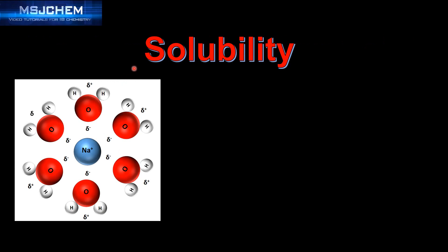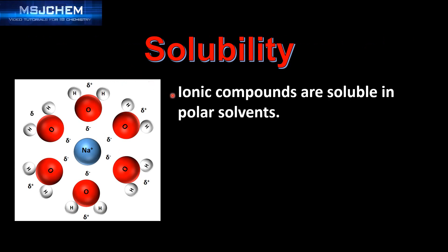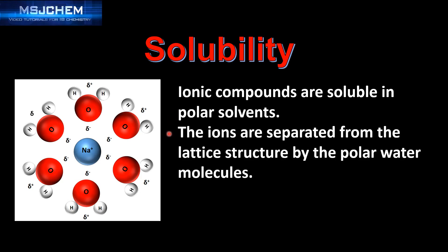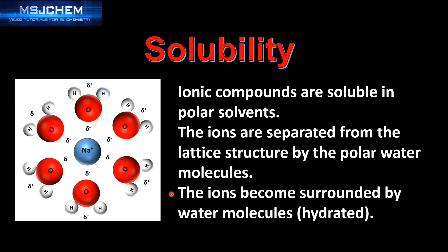Next we look at solubility. Ionic compounds are soluble in polar solvents such as water. The ions are separated from the lattice structure by the polar water molecules. The ions become surrounded by water molecules — they become hydrated.